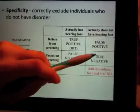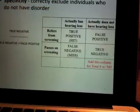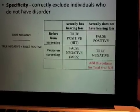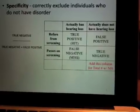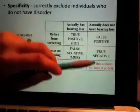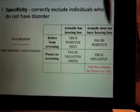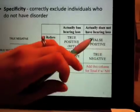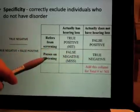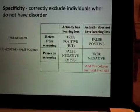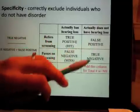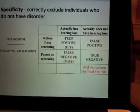Specificity is how well the screening correctly excludes individuals who did not have a disorder. We don't just want to identify those who need further testing — we also want to make sure we are not over-referring individuals who did not need to be referred. For specificity, we're most concerned with the column of those who actually do not have a hearing loss. We take the true negatives and divide by the sum total of true negatives plus false positives. The denominator for specificity is individuals who actually do not have hearing loss: true negatives plus false positives.